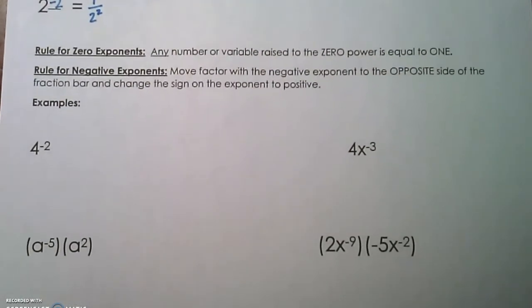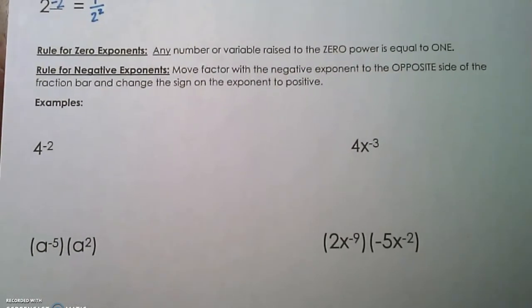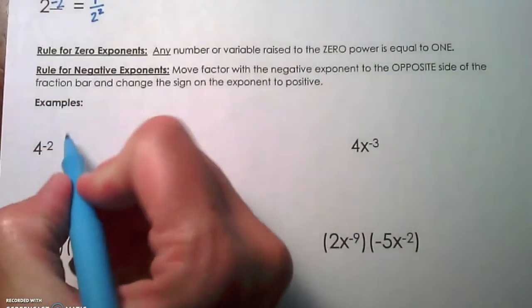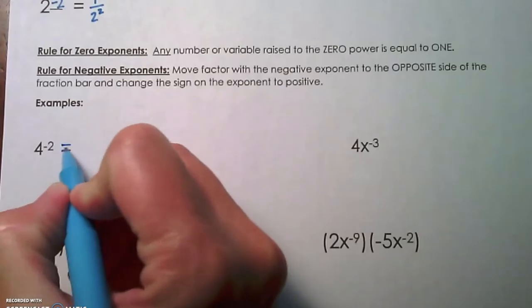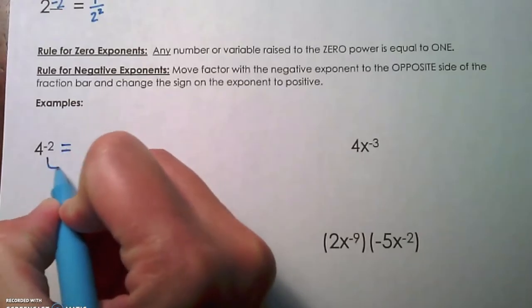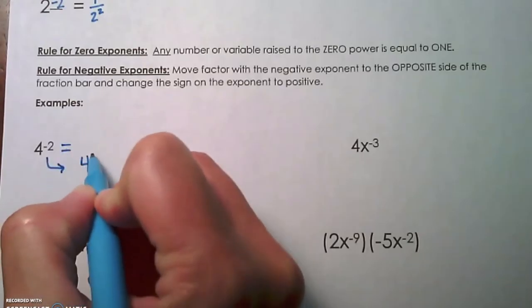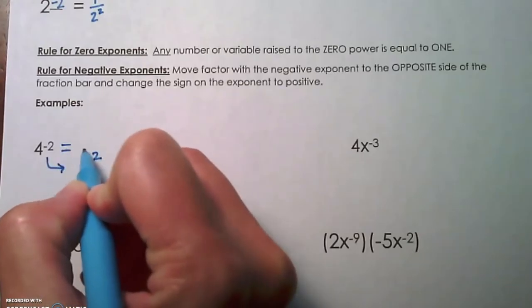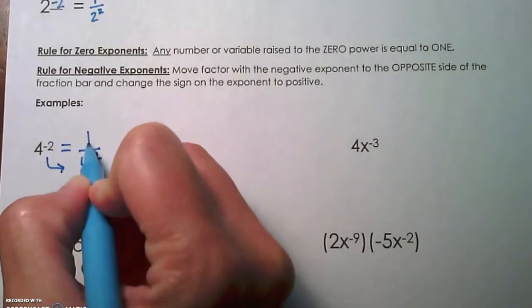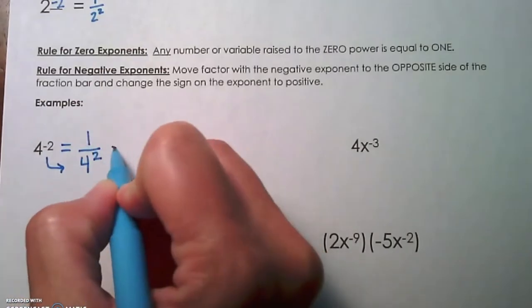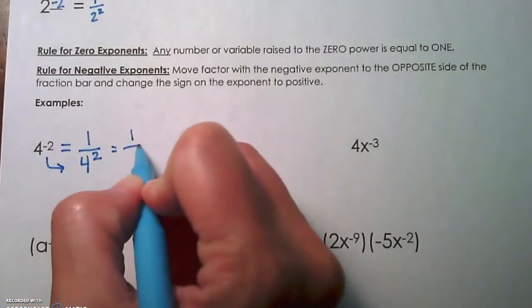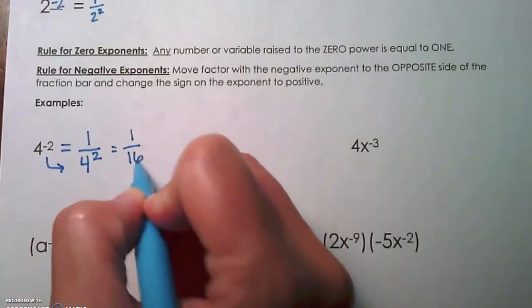Let's try some examples. 4 to the negative 2 — we are going to move that 4 down to the denominator and make the exponent positive. That's going to give us 1 over 16.